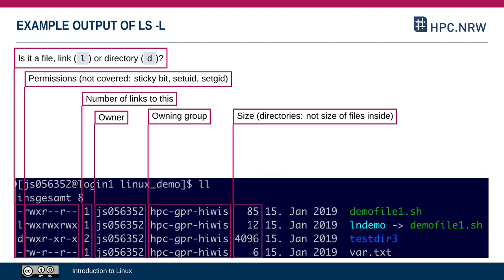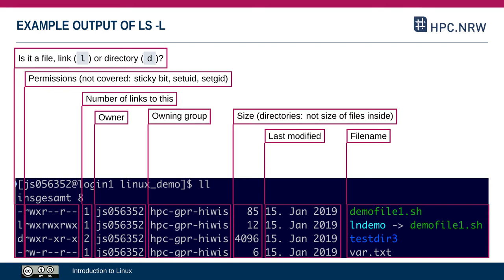If you want to know the size of all files in a directory, there's a separate command for that which we'll cover later. Next is the last modified date, which is fairly self-explanatory — when you modify a file, the filesystem records it and Linux sets this date. You can't completely trust it though, because it can be changed manually by the owner or by an admin.